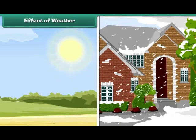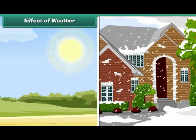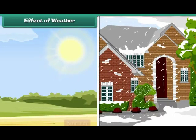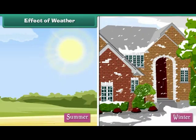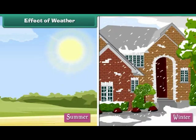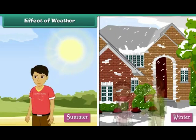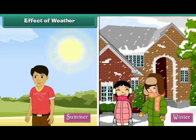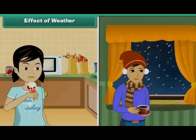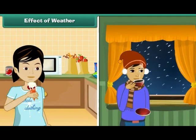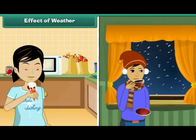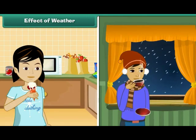Weather affects us in many ways. For example, we wear clothes according to the prevailing weather conditions. We wear cotton in summers and woolens in winters. The food that we eat also changes according to weather. We prefer to eat cold things in summers and hot things in winters.